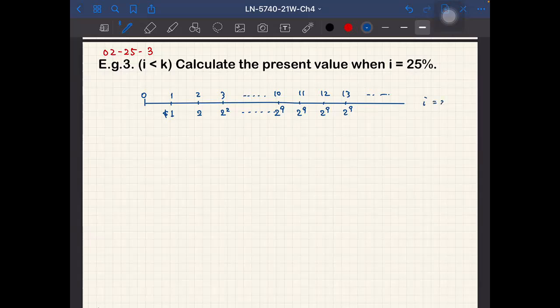And assume that i is equal to 25%. So we want to calculate the present value. And since this is a kind of combination of geometric progression and the usual perpetuity, we think about two different cash flows and sum up later.